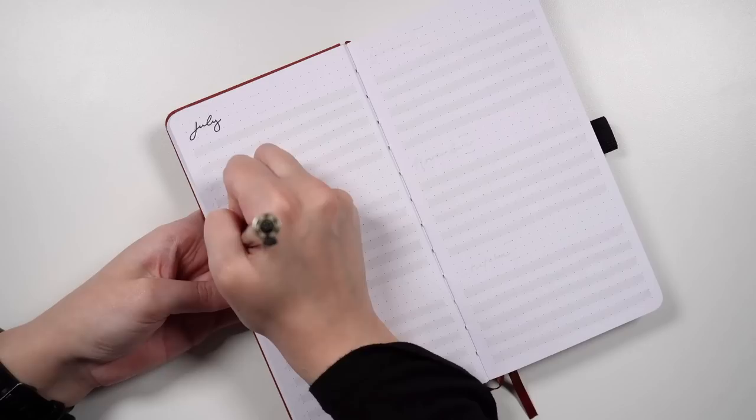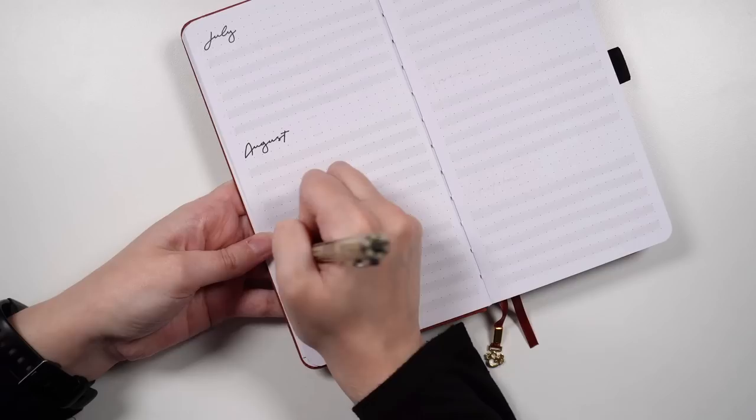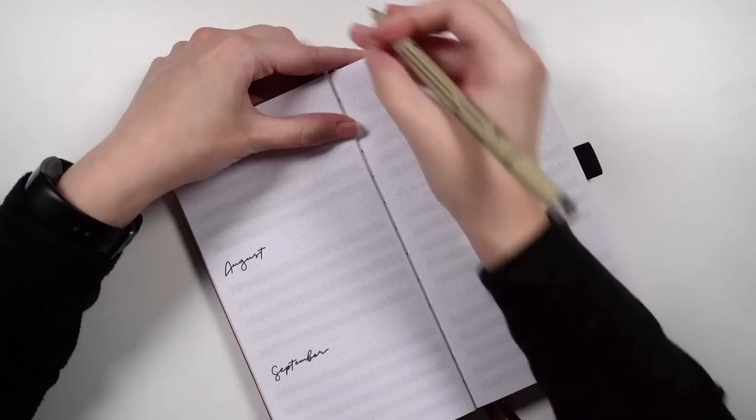In terms of the setup in general though, we do have six sections on the page, so five for the months of July through to November, and then one for any future future events. I don't really expect to have very many of those, but it's nice to have the space there just in case.